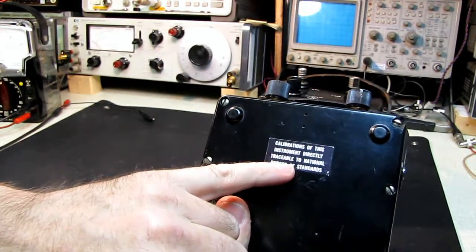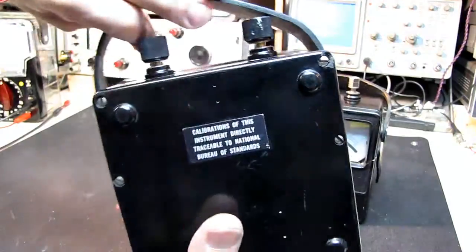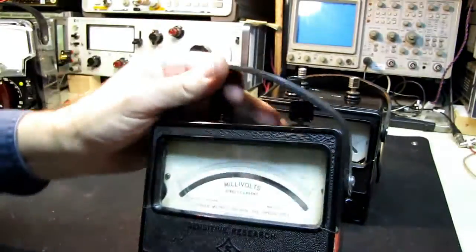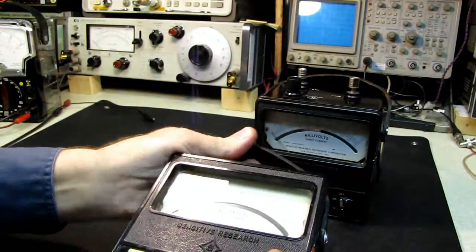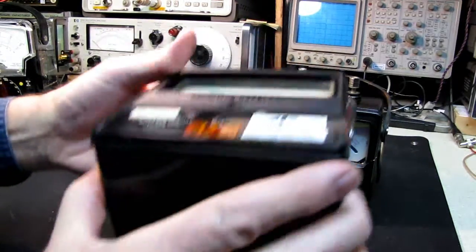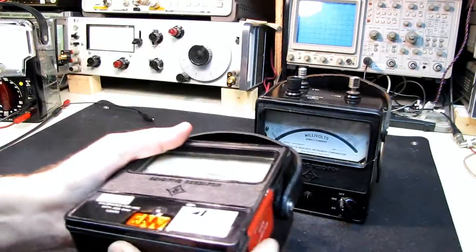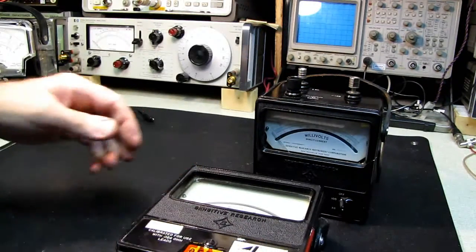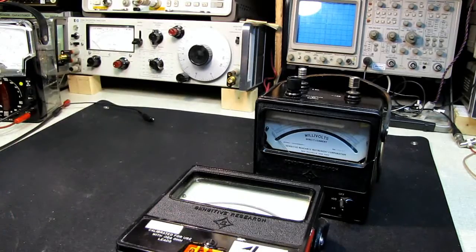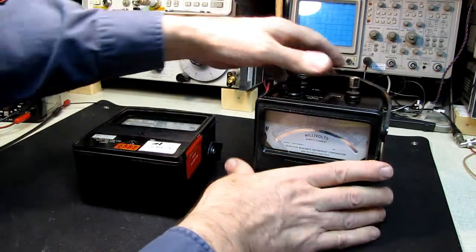On the back here it says calibrations of this instrument directly traceable to the National Bureau of Standards. I mean the care that they took back then. These meters were actually, I believe, designed to be operated on their backs. There are no feet on the bottom of them at all but the feet are on the back, and that's because these meter movements are so sensitive the only way to get an accurate balance on them is laying them on their back.